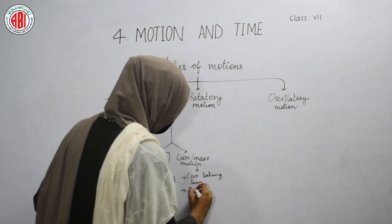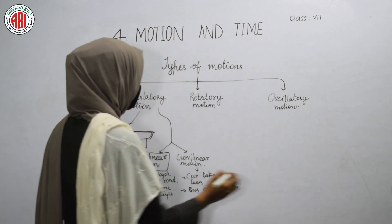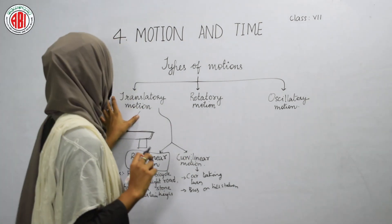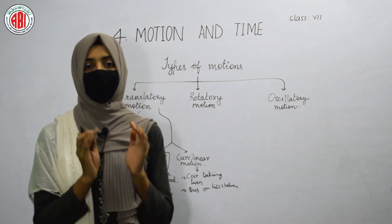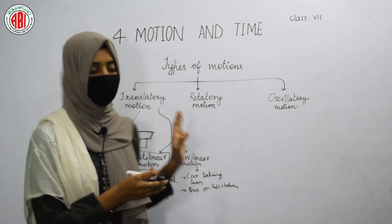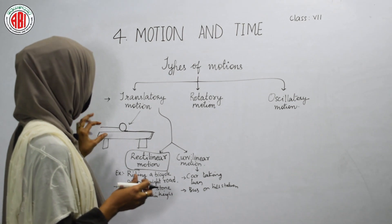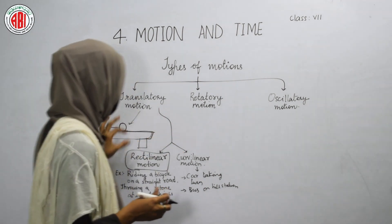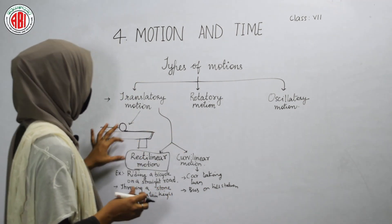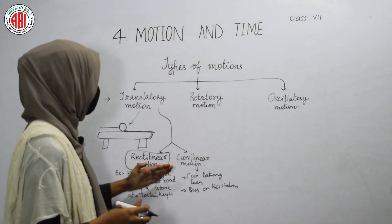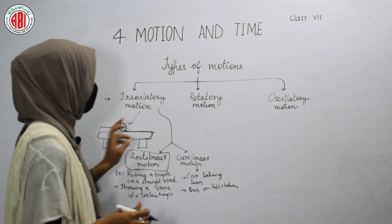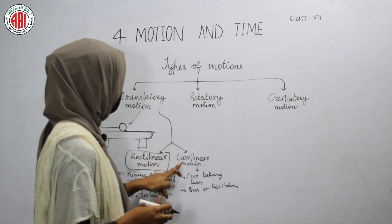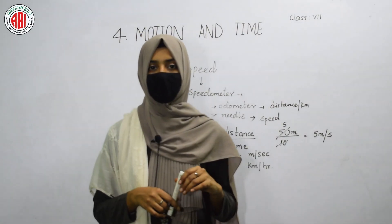A bus moving on a hill station road is another example of curvilinear motion. Translatory motion is the movement of all particles of an object along the direction of motion. Depending on the path, it is divided into rectilinear motion — movement along a straight line — and curvilinear motion — movement along a curved path. Thank you, meet you in the next class.